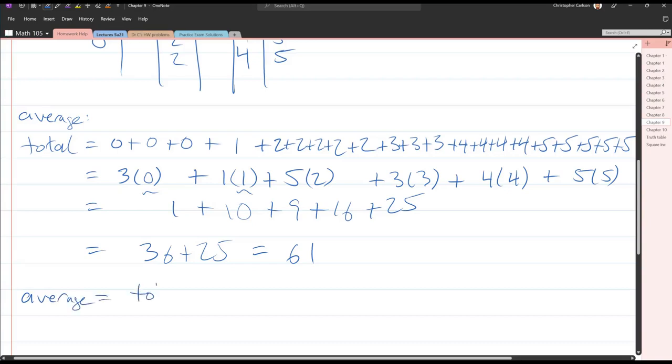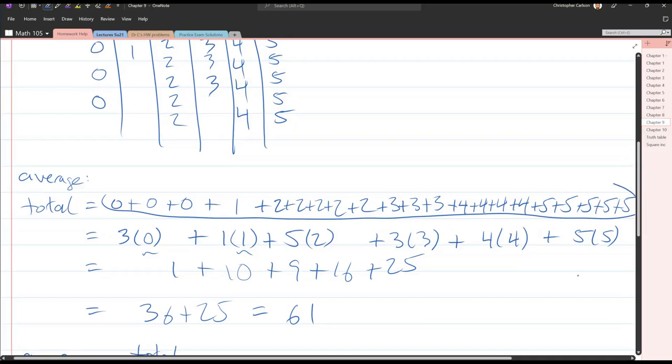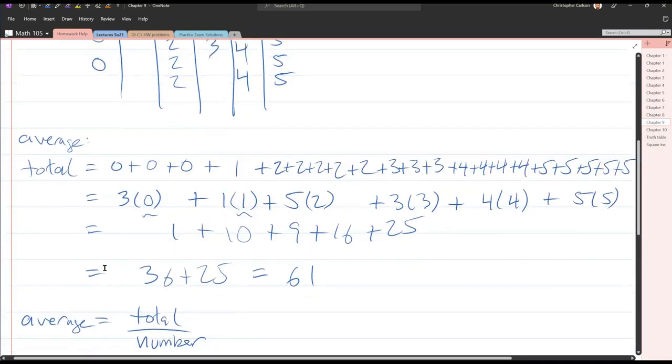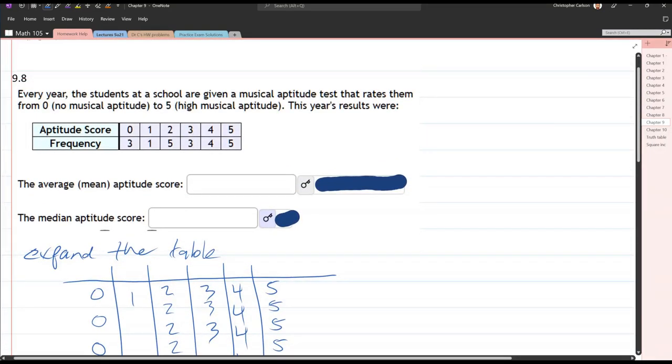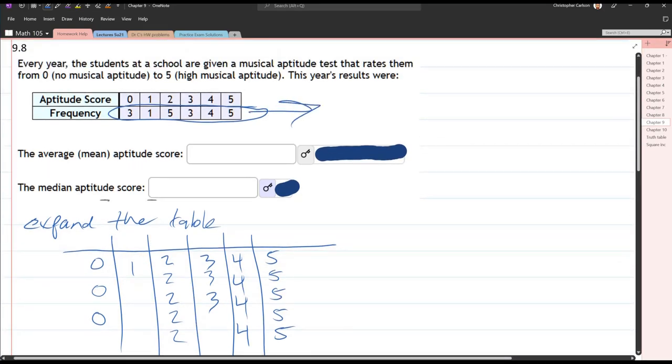Average is the total divided by the number. How many are there? Well, we could count the number of numbers that I wrote down here, but that's a lot. What we can also do is add up the frequencies. That's how many times each number appeared. I'm just going to grab the total right here off the frequency. So 3 and 1 is 4, and 5 is 9, 10, 11, 12, and 4 is 16, plus 5 is 21 total.